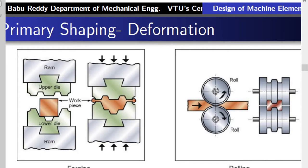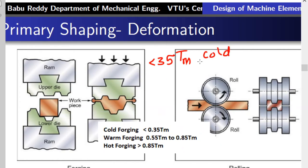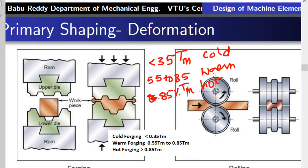In deformation processes, a large amount of force is applied to deform the material. Though the material is solid, because it is at high temperature it is in a soft condition. Based on temperature, processes are classified into three categories: if the temperature is less than 35% of the melting point temperature (Tm), it is called a cold process; between 55% to 85% it is a warm deformation or warm forging process; and above 85% of Tm it is hot forming or hot forging.